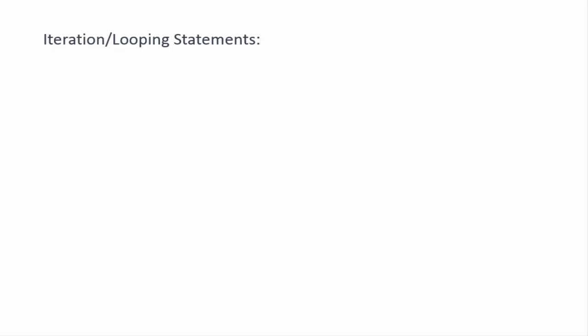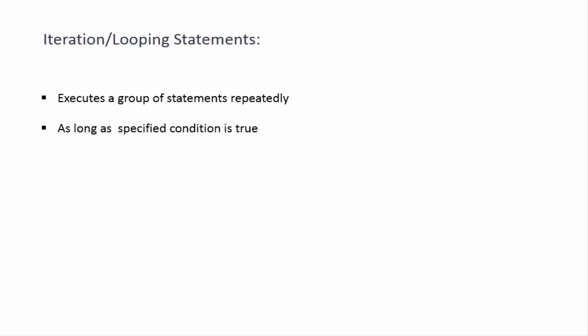In this lecture we'll study about iteration or looping statements. The work of these statements is that we can execute a set of statements repeatedly in our program. These statements will be executed as long as some specified condition is true, and once the condition becomes false, control will be transferred out of the loop. There are three iteration or looping statements in Java: while, do-while, and for.